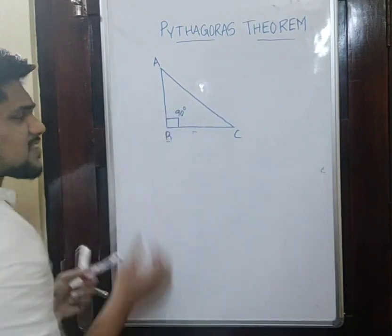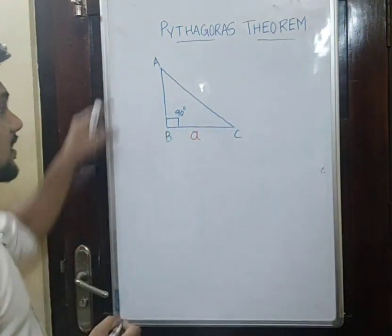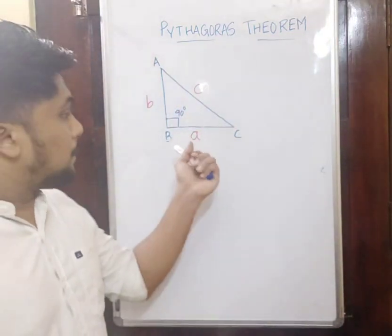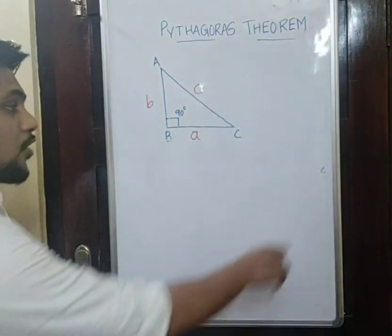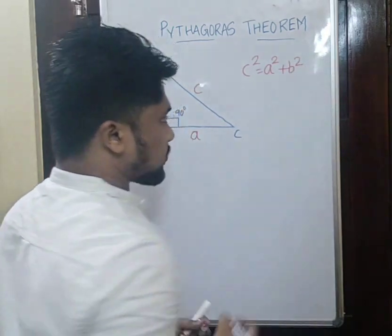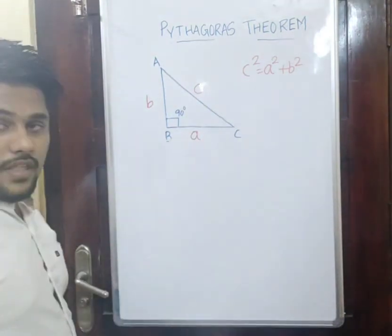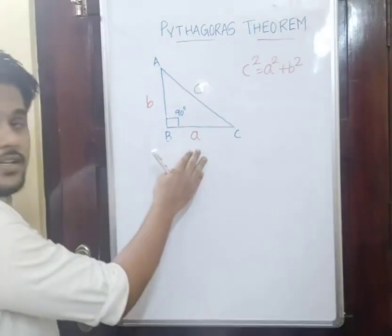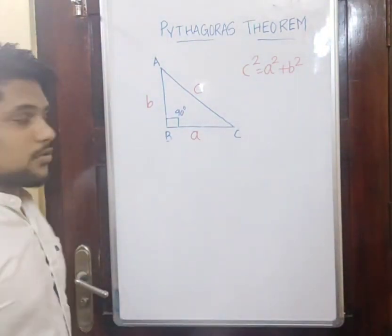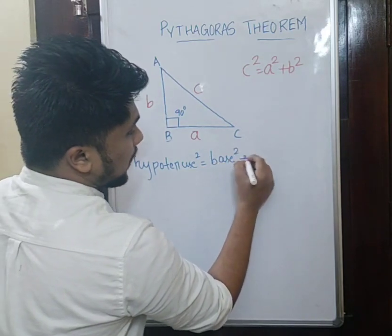I am giving some side lengths here. The length of side BC is A, the length of side AB is B, and AC is C. So we have A, B, and C. According to the Pythagoras theorem: C squared is equal to A squared plus B squared. That is, the hypotenuse squared is nothing but the sum of base squared plus altitude squared.